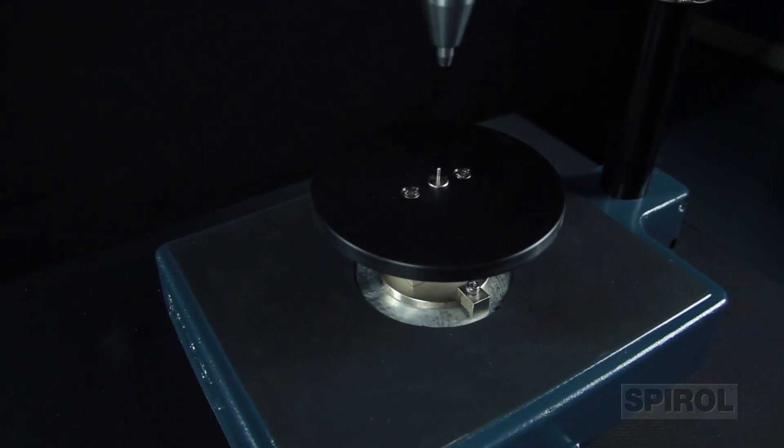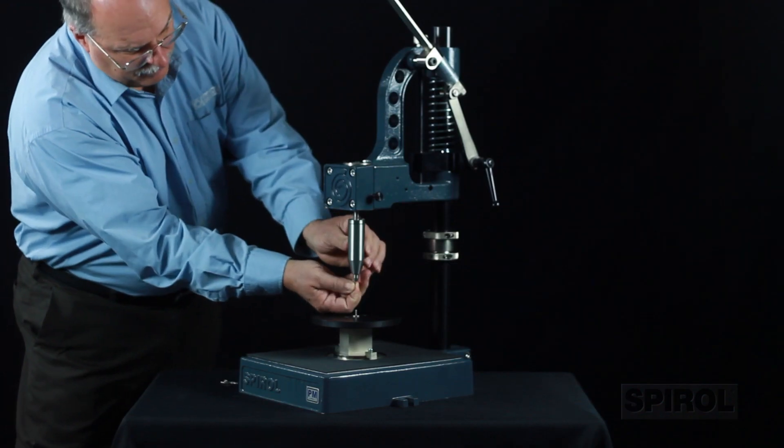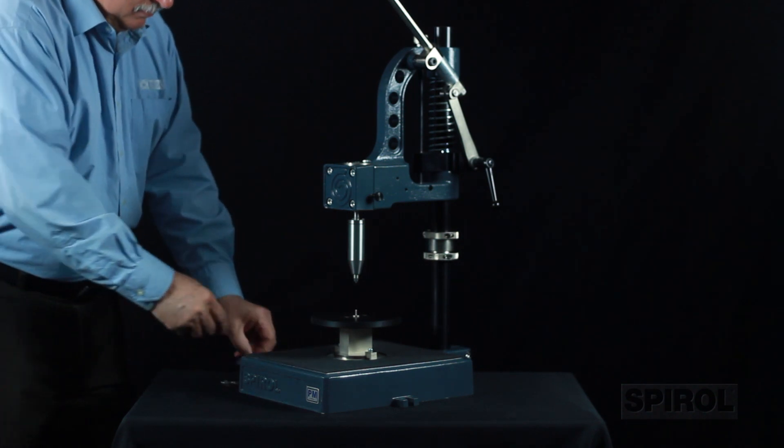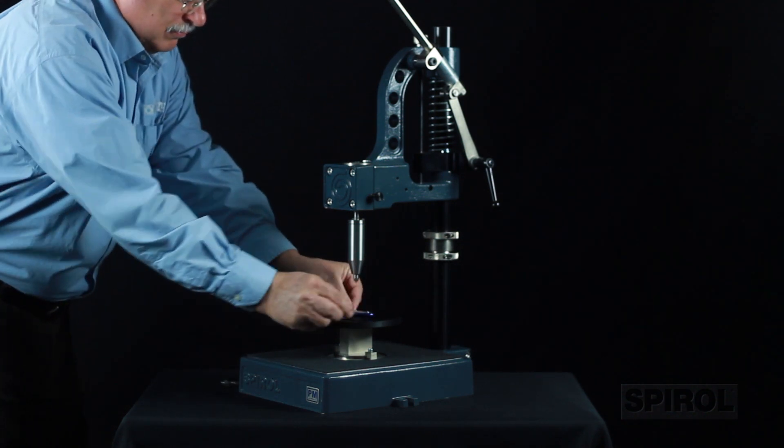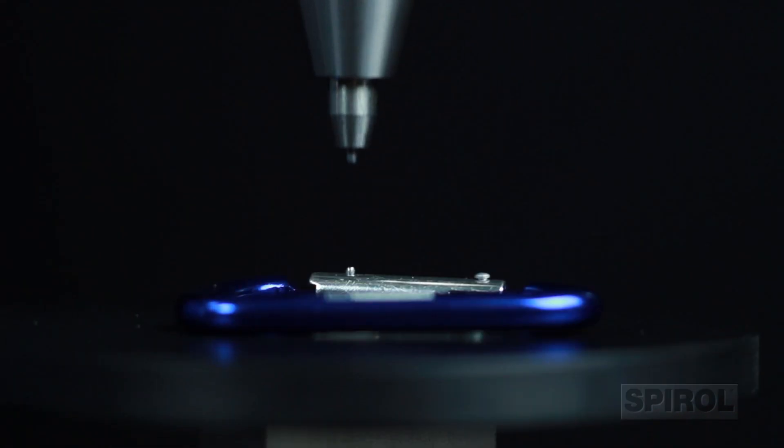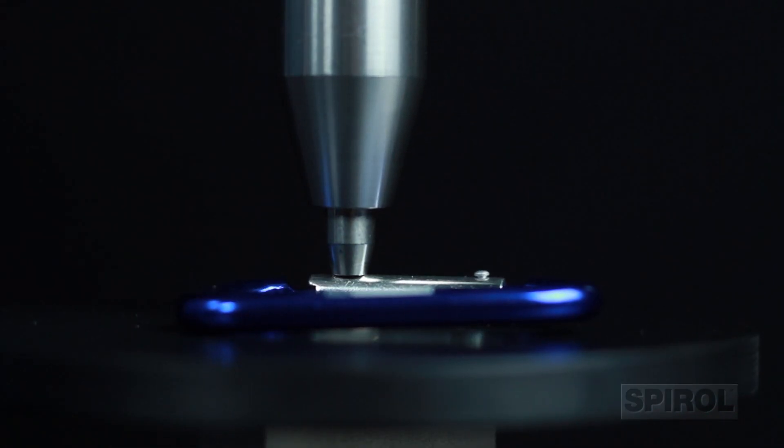Fixturing, one of Spiral's key strengths, allows us to apply over 70 years of installation experience to provide you with the most efficient application-specific part holding method to ensure stability and alignment during installation.